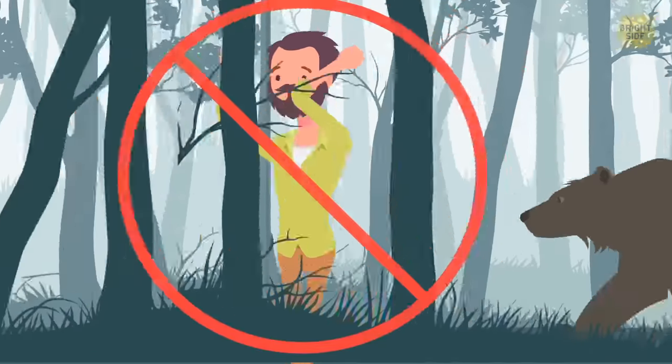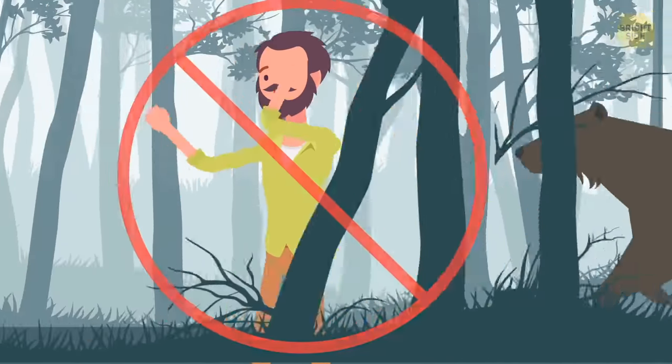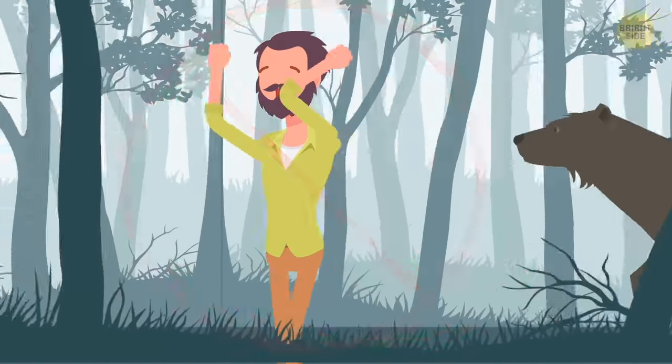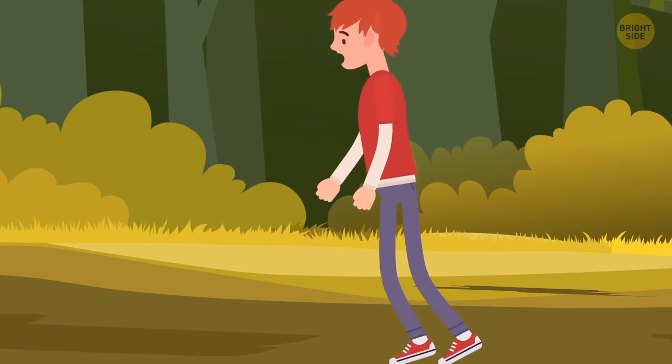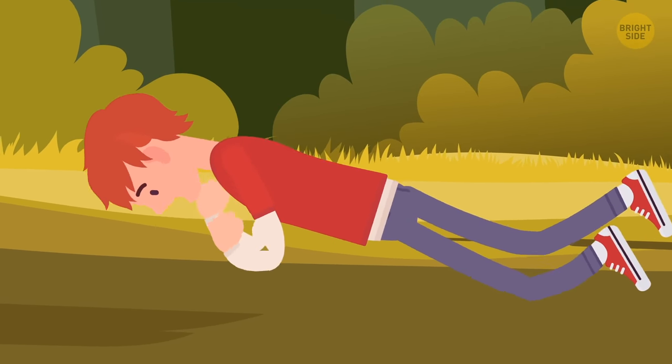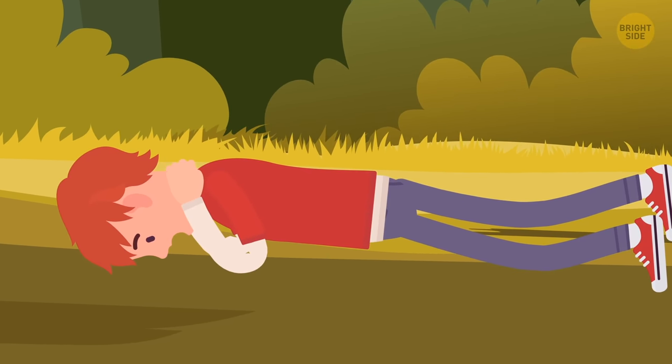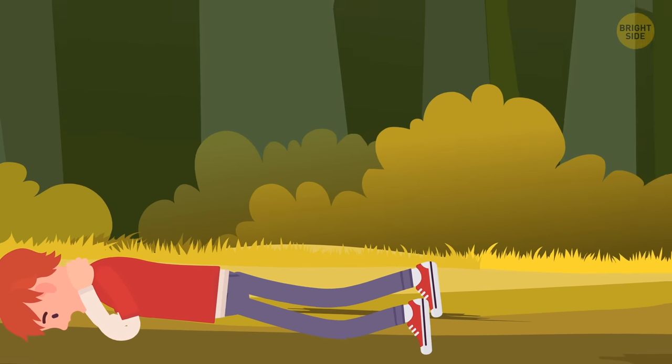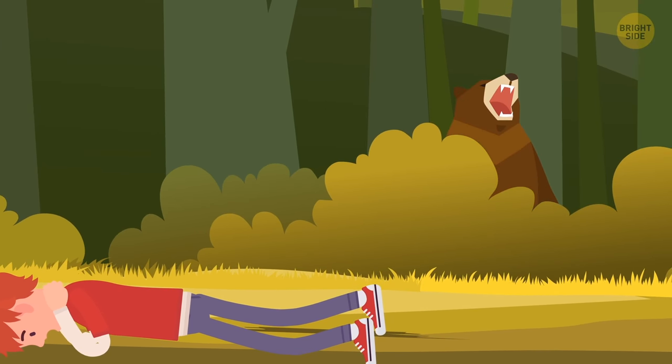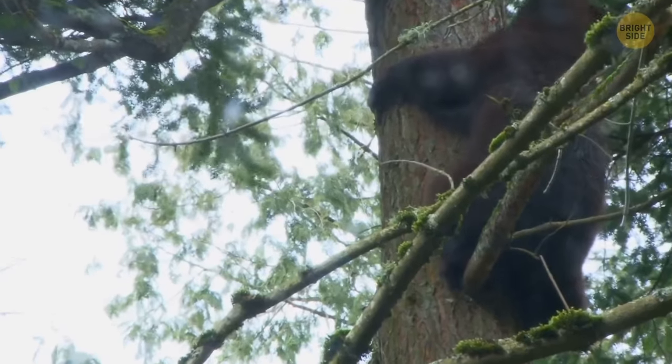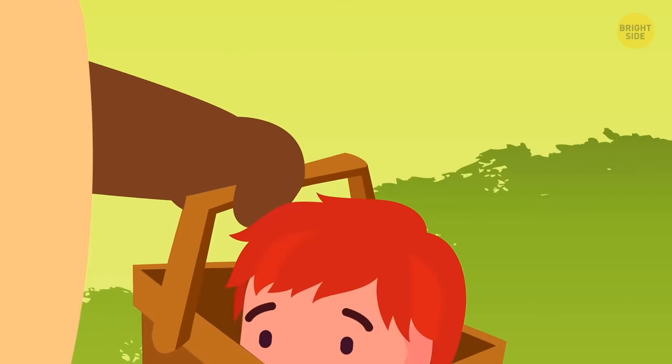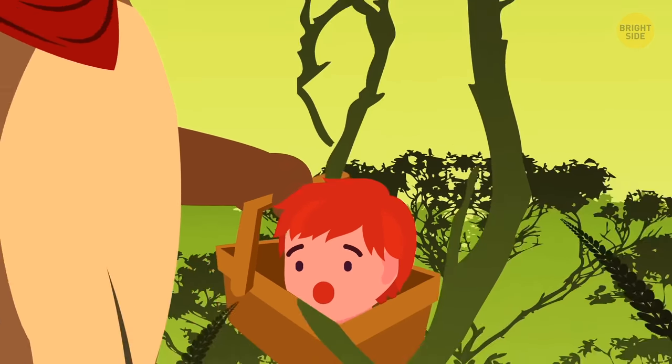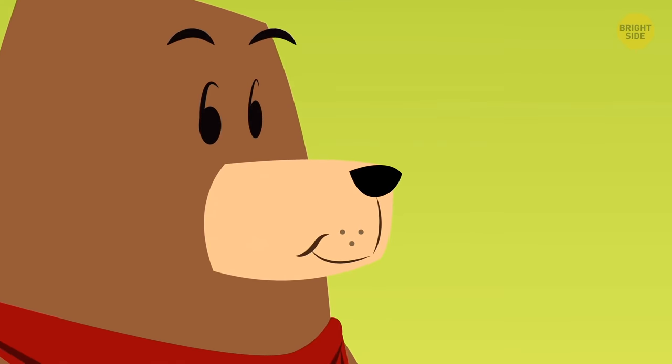If a black bear is chasing you, remember that you shouldn't turn your back on this animal or try to run. Either of these actions can make them hostile. Your best bet is to lie flat on your stomach to protect your organs, crossing your hands behind your neck to guard your arteries to convince the bear you don't pose any threat. Also, don't climb a tree. They do it better than you. Oh, and if you see Yogi Bear, don't try to look like a picnic basket. He'll steal you every time.